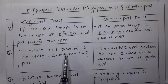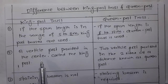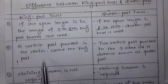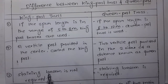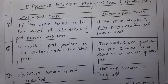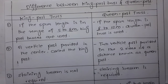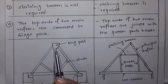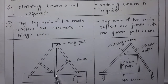In king post truss, there is a vertical member placed at the center of the tie beam, which is known as the king post. This vertical member placed at the center of the tie beam is known as a king post.